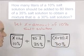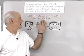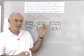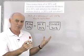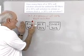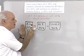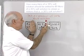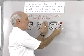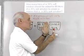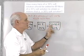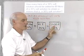The final solution will be 30% salt. So we're letting X equal the amount of 10% solution. We take X liters that's 10% salt, add that to 80 liters that's 35% salt, and end up with a solution that's 30% salt, with X plus 80 liters total.